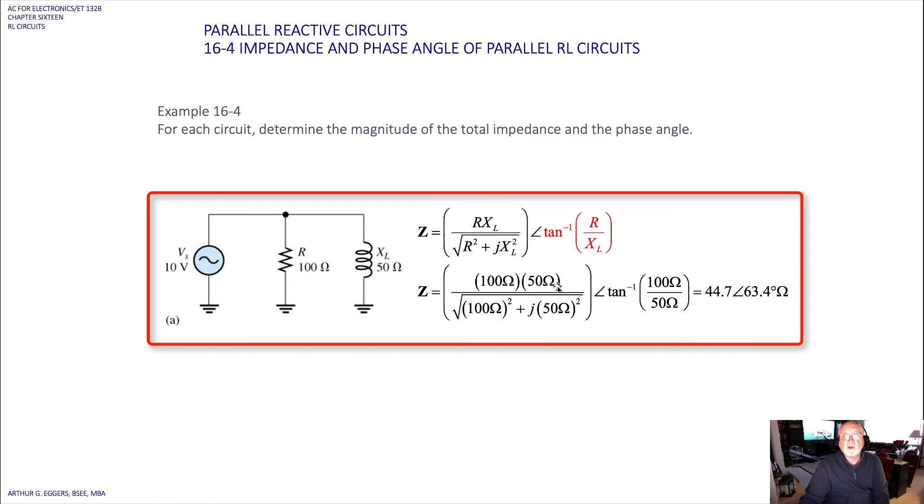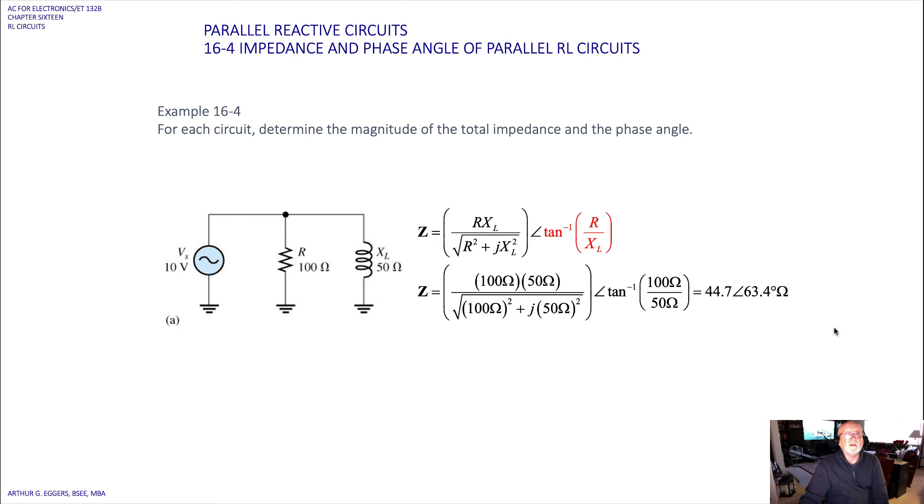...we end up with, then, 100 ohms, 50 ohms for our values, product over the sum, inverse tangent, we get 44.7 at an angle of 63.4 degrees in ohms.